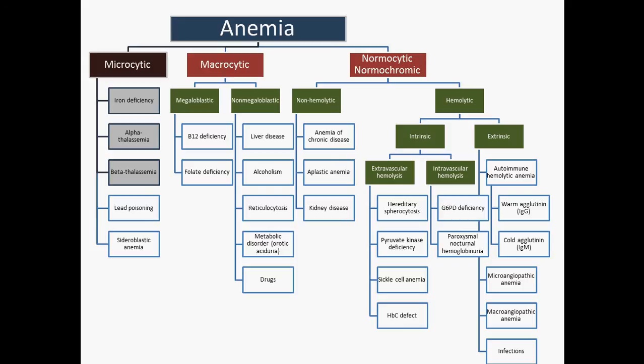If you have deletion of all four alpha globin genes, that is incompatible with life — you're going to have formation of Hemoglobin Bart's, which causes hydrops fetalis. With beta thalassemia, the same kind of principle applies: if you're a heterozygote it's not going to cause a whole lot of problems, but if you're a homozygote you end up with much more severe problems. The diagnosis is confirmed by hemoglobin electrophoresis.